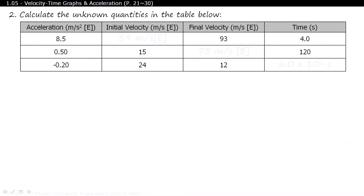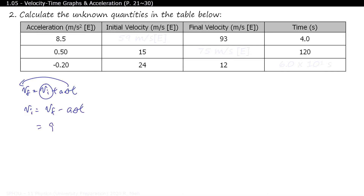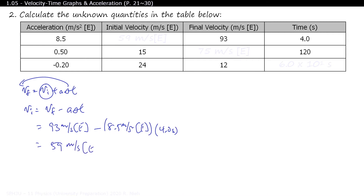For these problems, you just have to keep rearranging the equation. For the first one, you'll take VF = VI + AΔT and isolate for VI. When you bring AΔT over, it becomes negative, so VI = VF − AΔT. So 93 m/s east minus 8.5 m/s² east times 4.0 seconds works out to 59 m/s east.